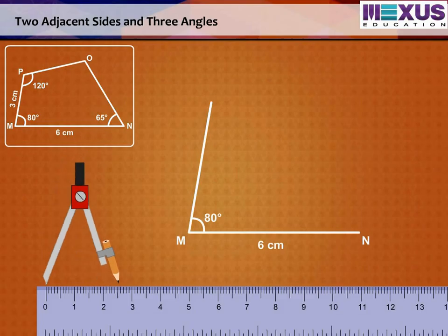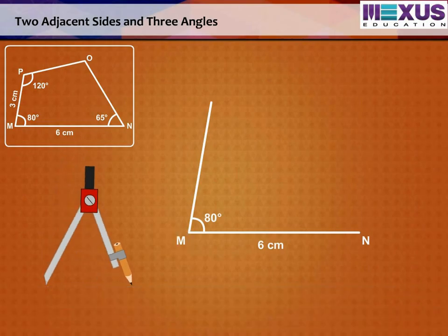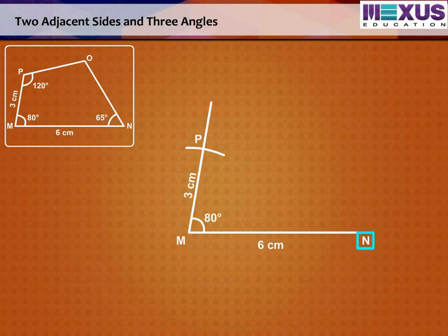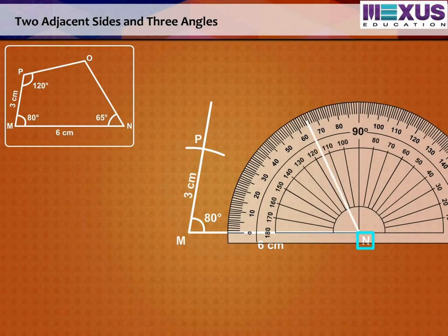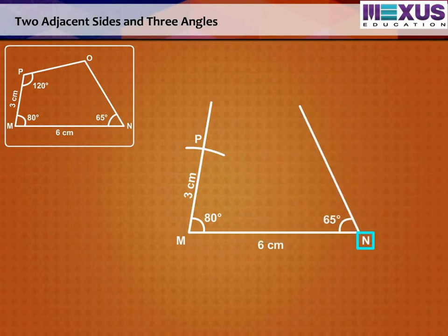Cut an arc on this line with M as center and radius 3 cm and mark the point as P, as we know MP is equal to 3 cm. Step 4. At N, draw an angle of 65 degrees with the help of the protractor.